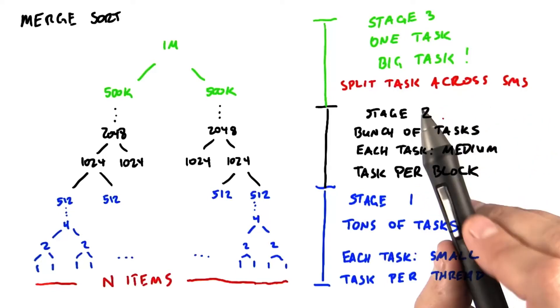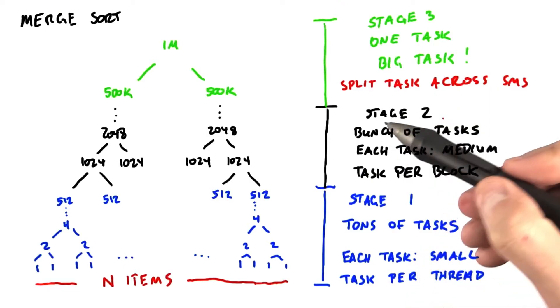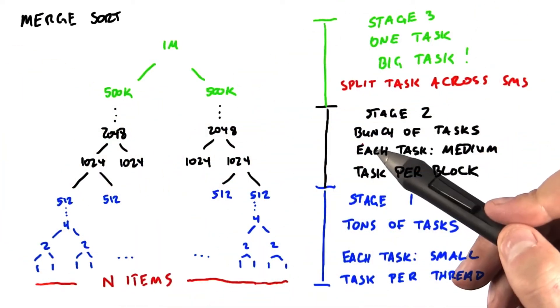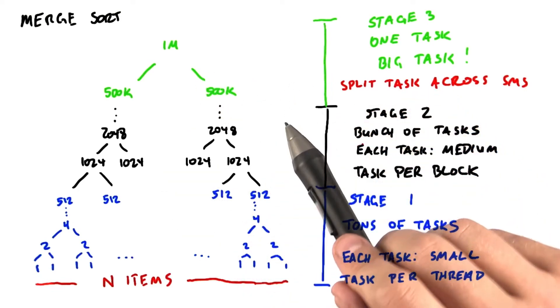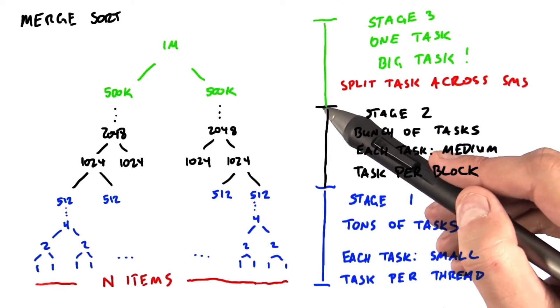So now we need to turn to an algorithm that allows us to have many SMs working on a single merge. Our strategy here is going to be to try to break up this one huge merge task that we need to do into a bunch of smaller merges, each of which can then be processed independently and in parallel by a different SM.